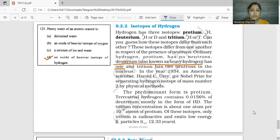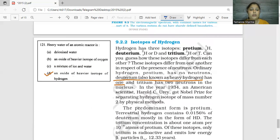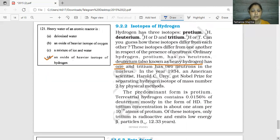This is also a repeated question. Heavy water in an atomic reactor is an isotope of hydrogen. Deuterium, which we call heavy hydrogen or heavy water, is an isotope of hydrogen.